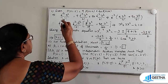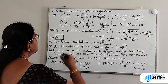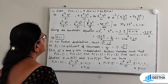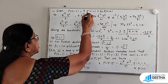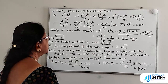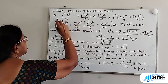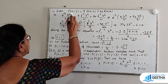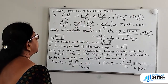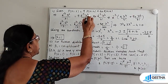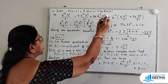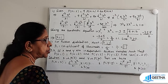Given P(X=2) = 9·P(X=4) + 90·P(X=6), substituting: e^(−λ) · λ² / 2! = 9 · e^(−λ) · λ⁴ / 4! + 90 · e^(−λ) · λ⁶ / 6!.